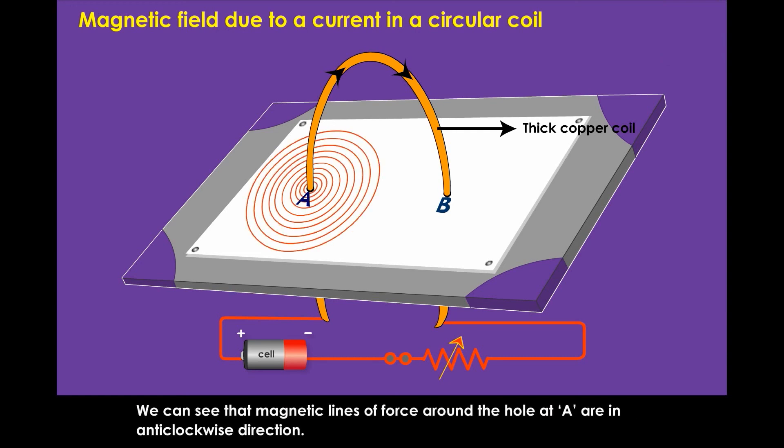We can see that magnetic lines of force around the hole at A are in anti-clockwise direction.